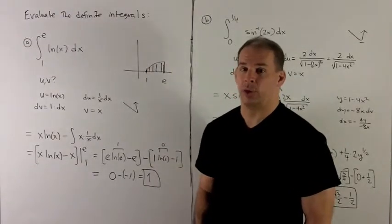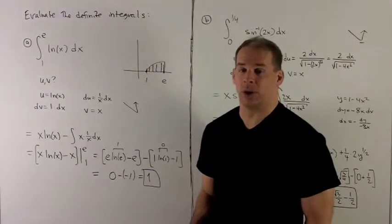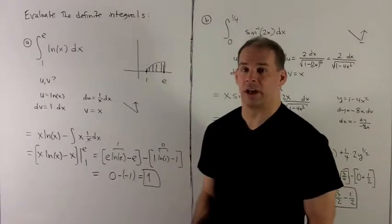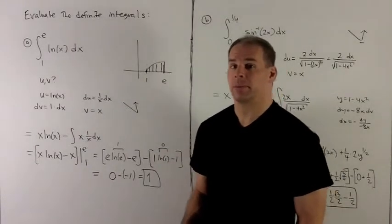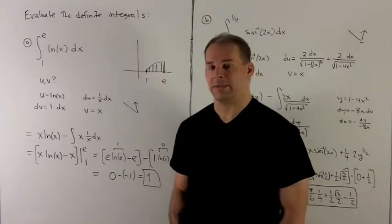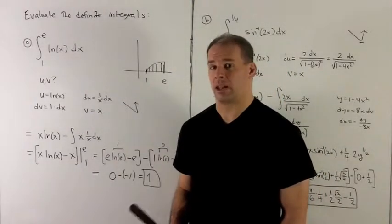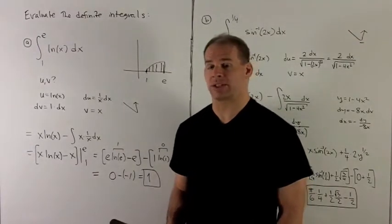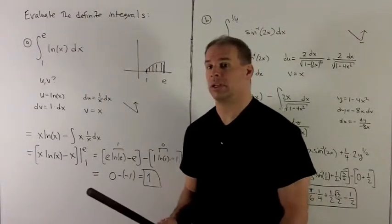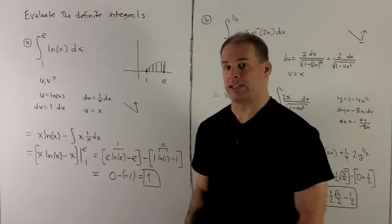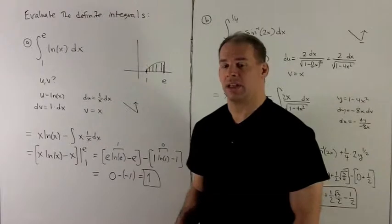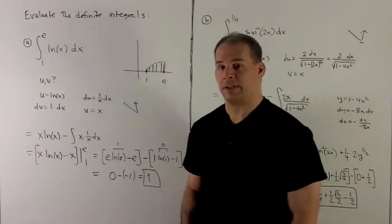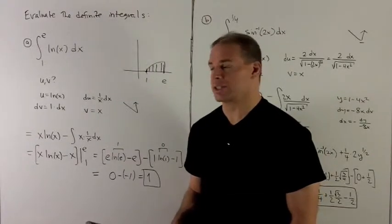If I let u be equal to 1, du goes to 0 — that's not very helpful. So we'll let dv be equal to 1 dx, and I'll let u be equal to natural log of x. Then du is 1 over x dx, and v is just going to be equal to x.